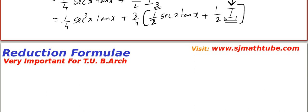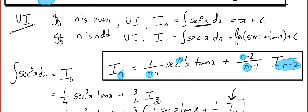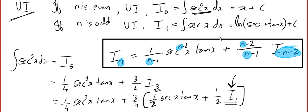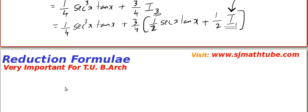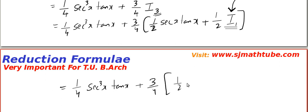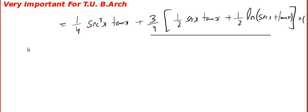Now that's it. You plug in the value of I1. I1 is ln sec x plus tan x and we will write that step here. So 1 by 4 sec to the power 3x tan x plus 3 by 4 and in bracket 1 by 2 sec x tan x plus 1 by 2 natural logarithm of sec x plus tan x. So that's it.